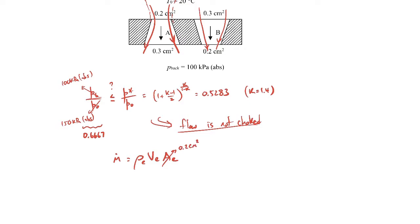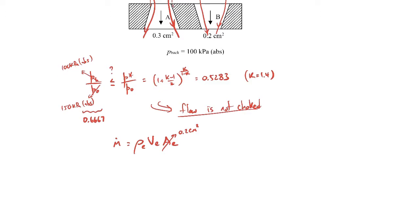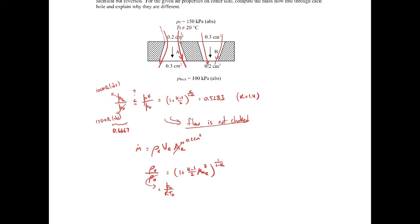To find the density at the exit, we use the isentropic stagnation ratio: ρe/ρ0 as a function of exit Mach number. The stagnation density ρ0 comes from the ideal gas law: p0 over R·T0. We know p0 = 150 kPa, T0 = 20°C = 293 K, and R for air = 287 J/(kg·K).